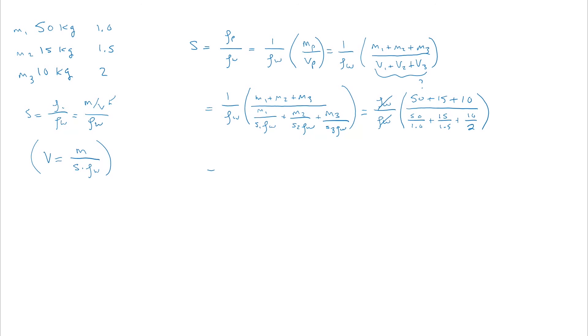Nicely, these cancel and we're almost done. We have 50 plus 15 plus 10 is 75, divided by 50 divided by 1 is 50, plus 15 divided by 1.5 is 10, plus 10 divided by 2 is 5. So we have an answer of 75 divided by 65. This is equal to about 1.15. And this is our specific gravity.